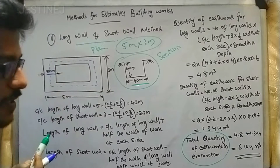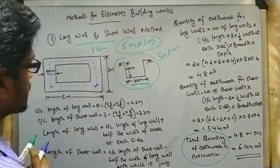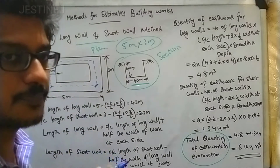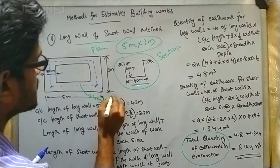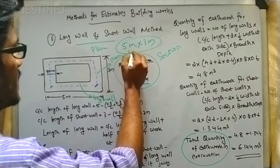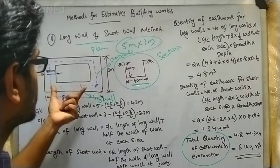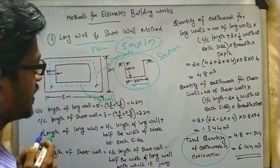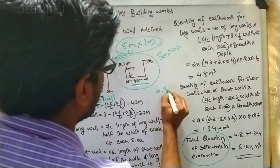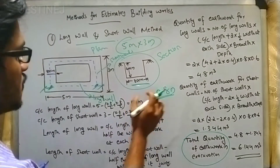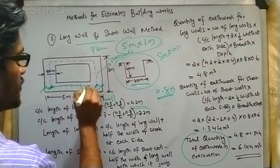Our intention is to first find out the center-to-center distance. Before that, we have to determine which wall to consider as the long wall and which as the short wall. From the dimensions, we can observe that the 5 meter sides are the long walls and the 3 meter sides are the short walls. The center-to-center length of the long wall is 5 meter minus 0.4 meter on each side (half of 0.8 m), giving 4.2 meter.